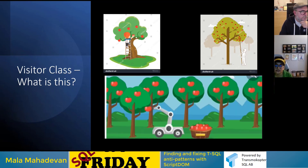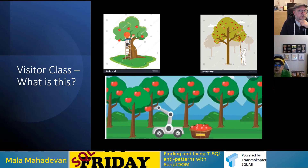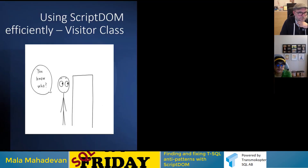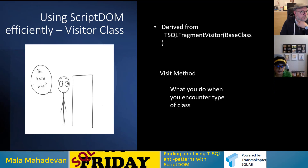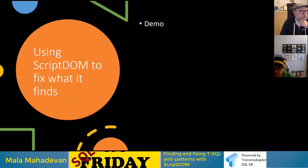A visitor class is derived from the base class TSQLFragmentVisitor. The visit method defines what happens when you encounter a specific type of class — for example, a SelectStarExpression, an index setting, or a query hint. The visit method tells you what to do — do you consider this an anti-pattern, or do you want to do something else with it? Let me show you how that works.